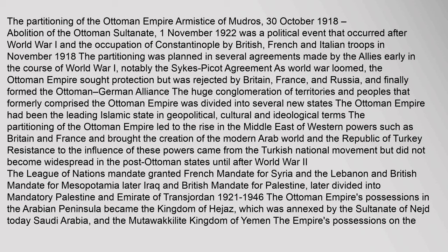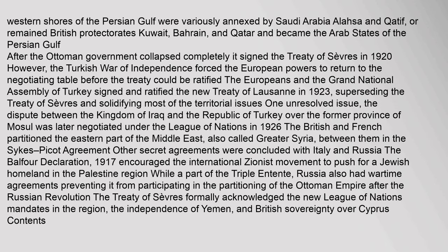The Ottoman Empire's possessions in the Arabian Peninsula became the Kingdom of Hejaz, which was annexed by the Sultanate of Nejd, today Saudi Arabia, and the Mutawakalite Kingdom of Yemen. The Empire's possessions on the western shores of the Persian Gulf were variously annexed by Saudi Arabia, or remained British protectorates — Kuwait, Bahrain, and Qatar — and became the Arab states of the Persian Gulf after the Ottoman government collapsed completely.